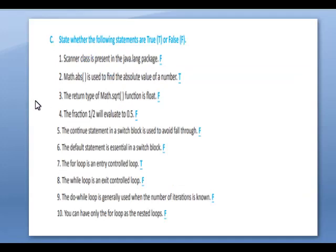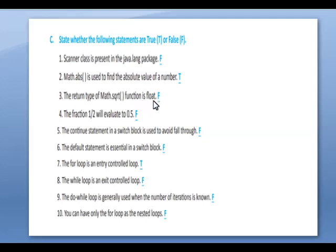Next, state true or false. Scanner class is present in java.lang package — False. Math.abs() is used to find the absolute value of a number — True. The return type of Math.sqrt() function is float — False, it is double.